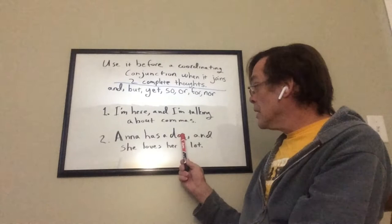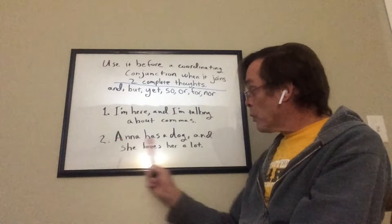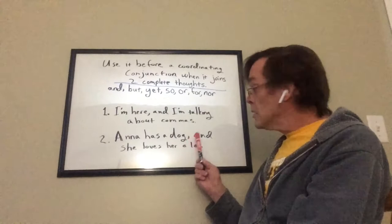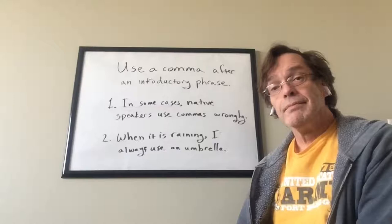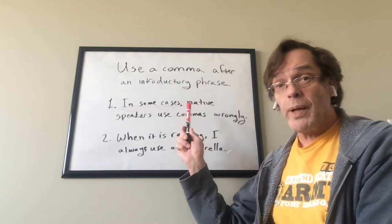Another example: Anna has a dog, and she loves her a lot. 'Anna has a dog' is one complete thought. Then it has a comma, the coordinating conjunction 'and,' then 'she loves her a lot' — this is another complete thought.